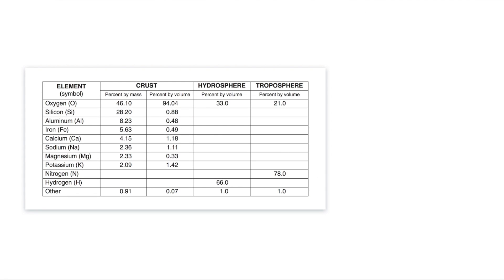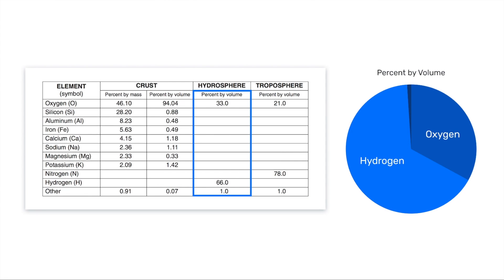Let's take a look at the next area, which is the hydrosphere. The hydrosphere is the liquid water on Earth. We all know that water is H₂O — two parts hydrogen, represented by 66% in our pie chart and table, and one part oxygen, shown by 33%. Then there's a little bit of other, which represents the other elements that exist in the water on Earth.